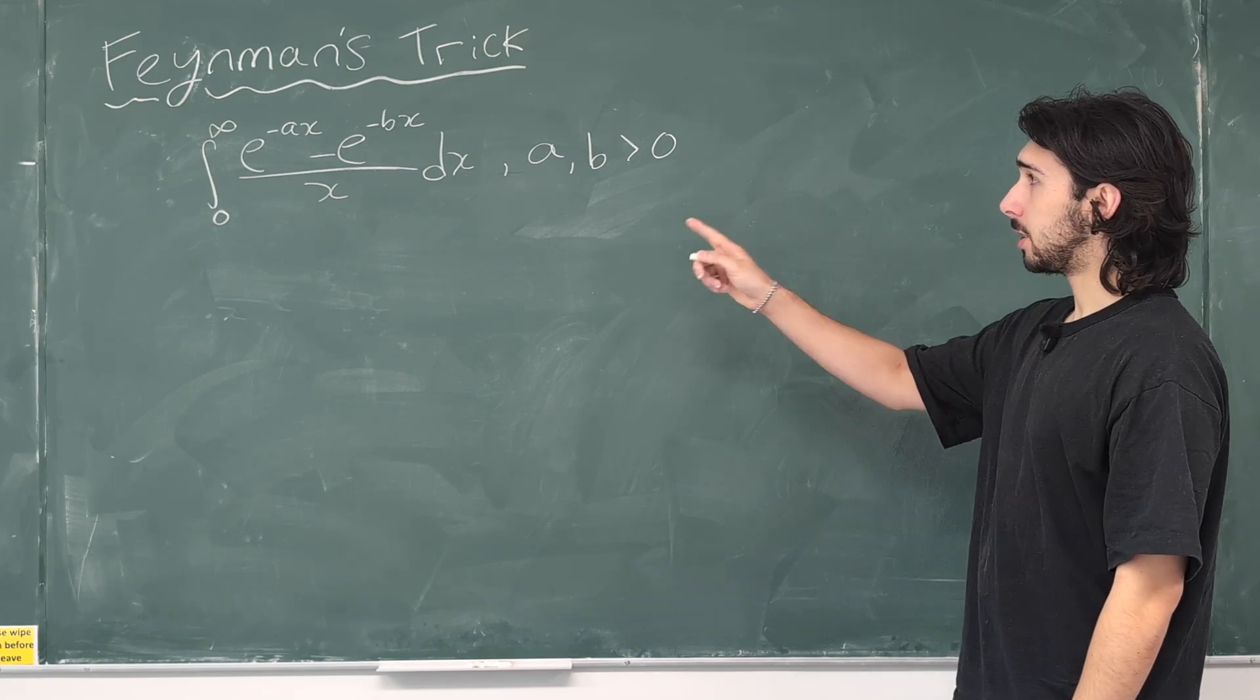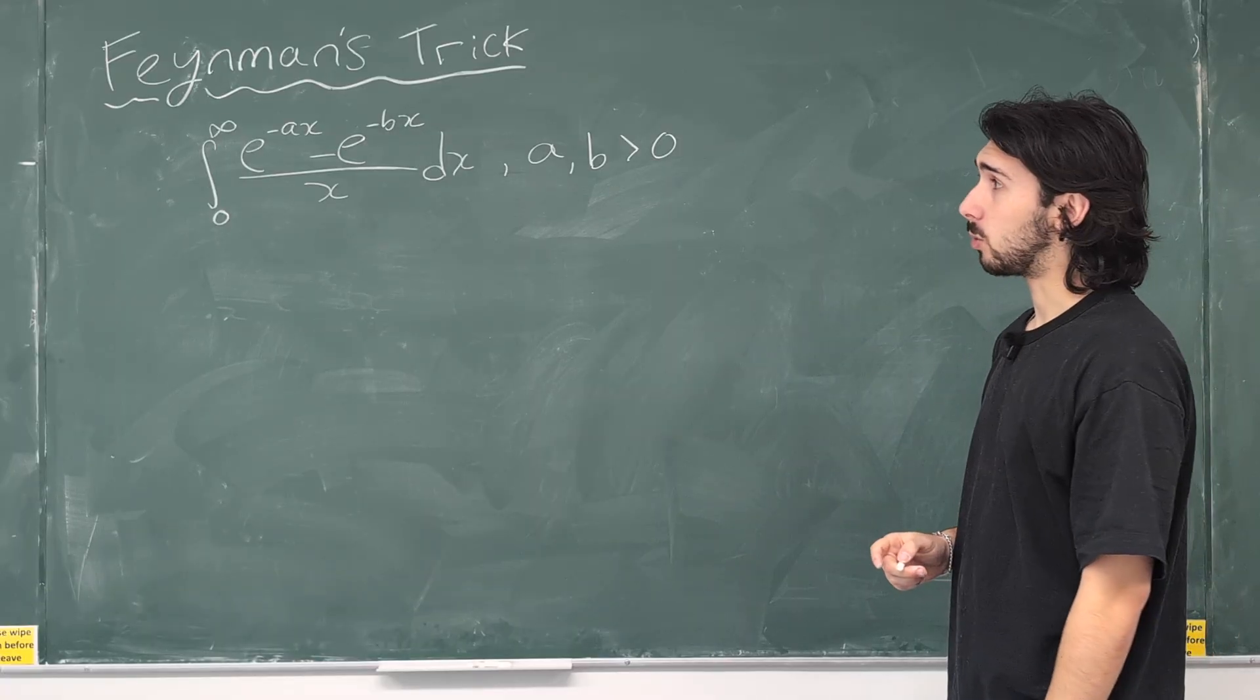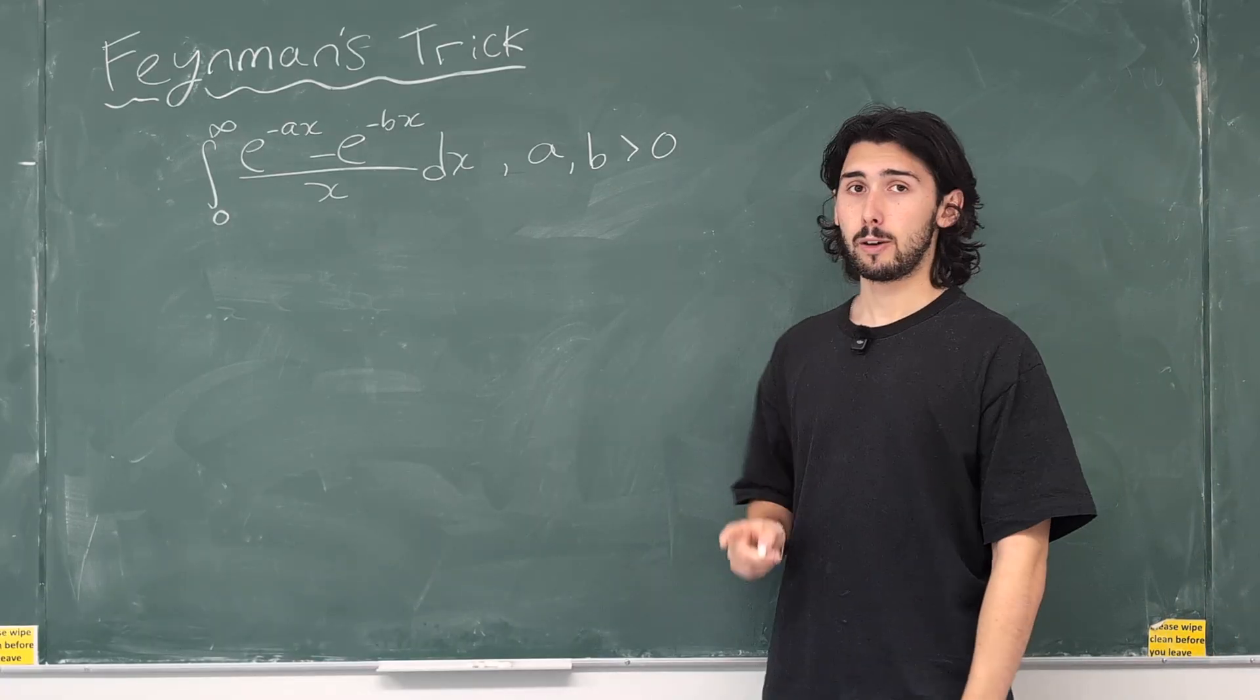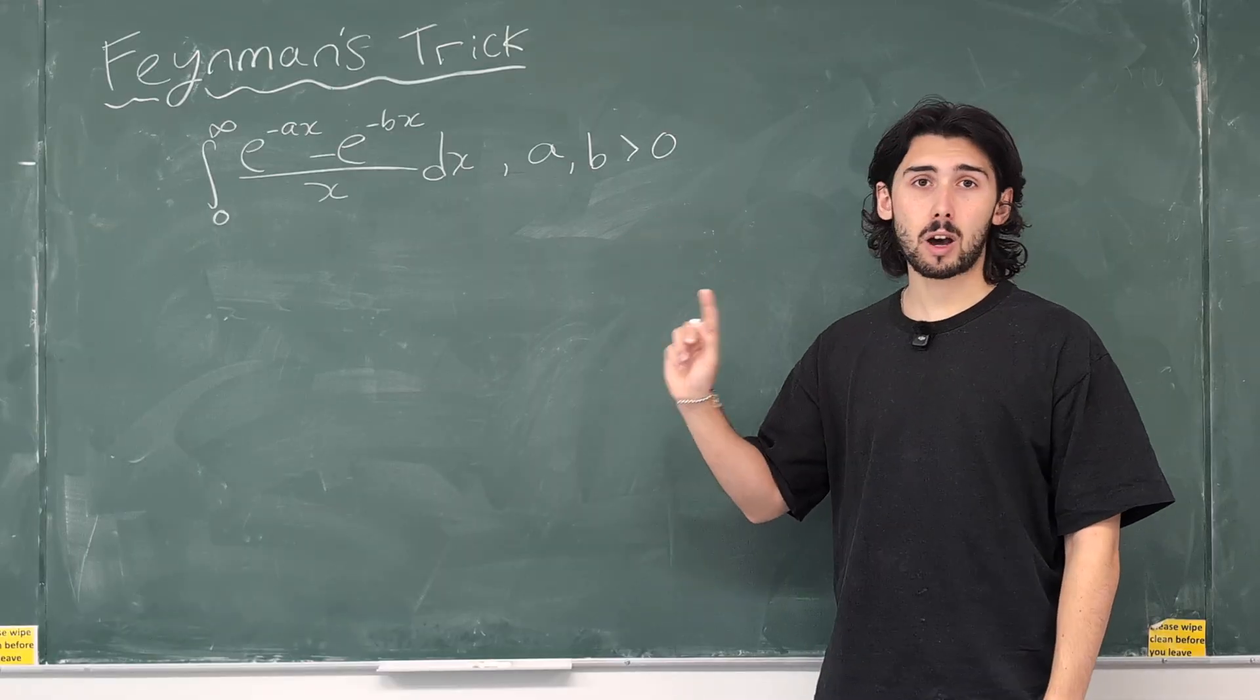This is an integral we're going to do with Feynman's trick. Now, the question is, why would we use Feynman's trick? First of all, is there an obvious other method?